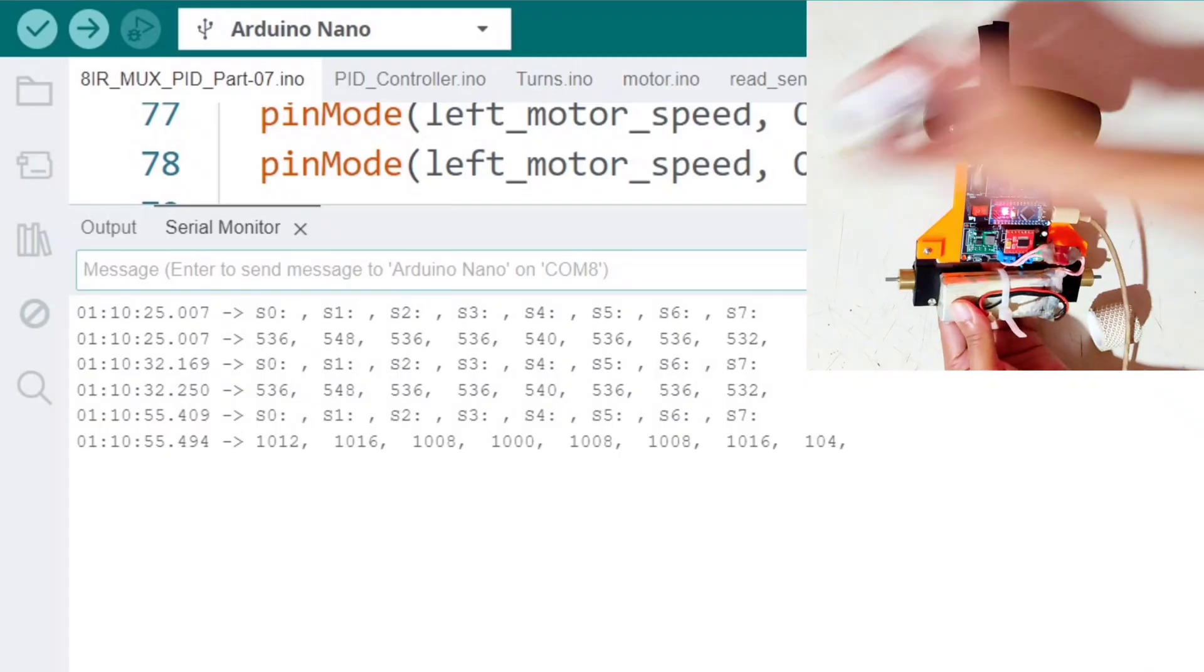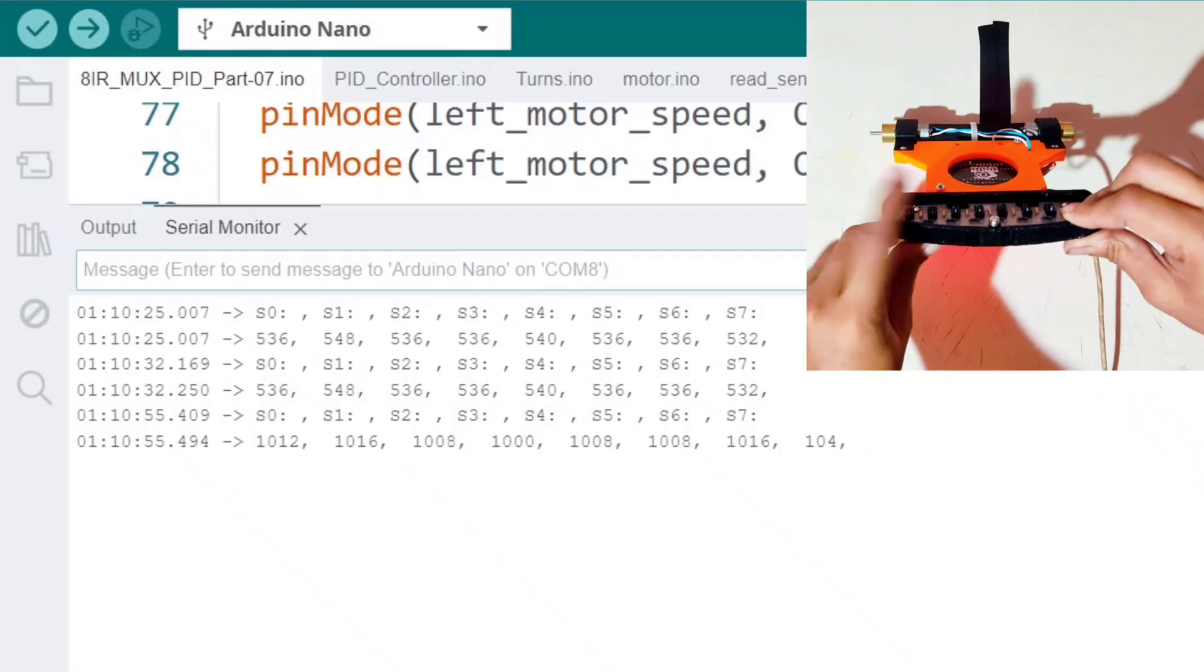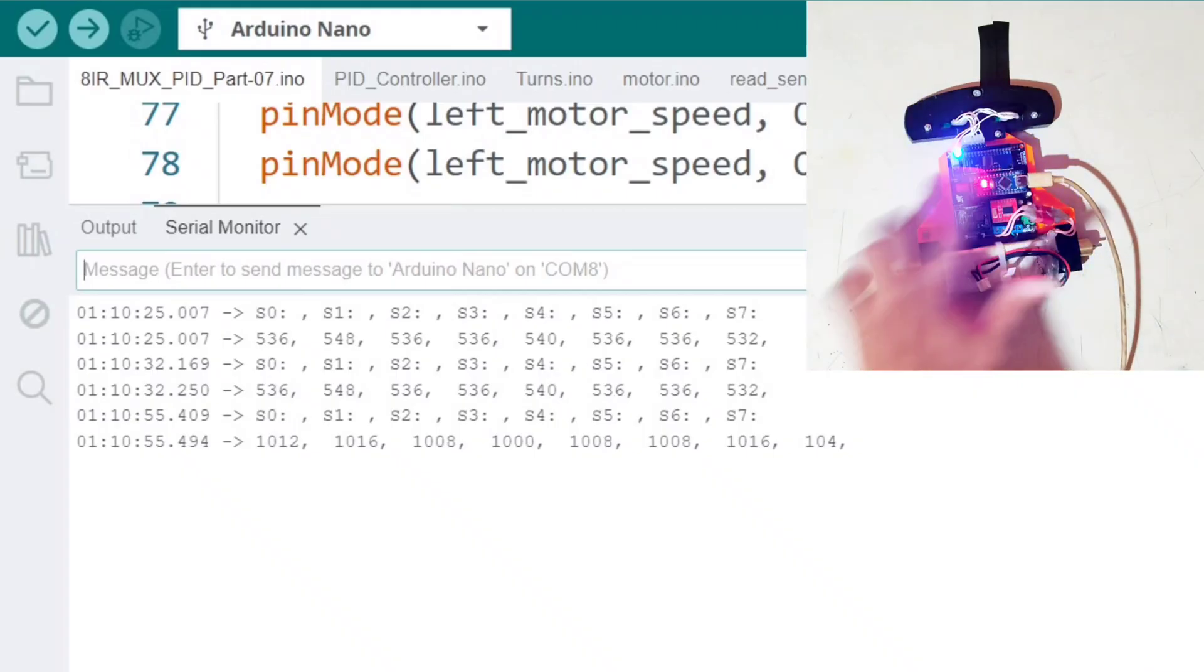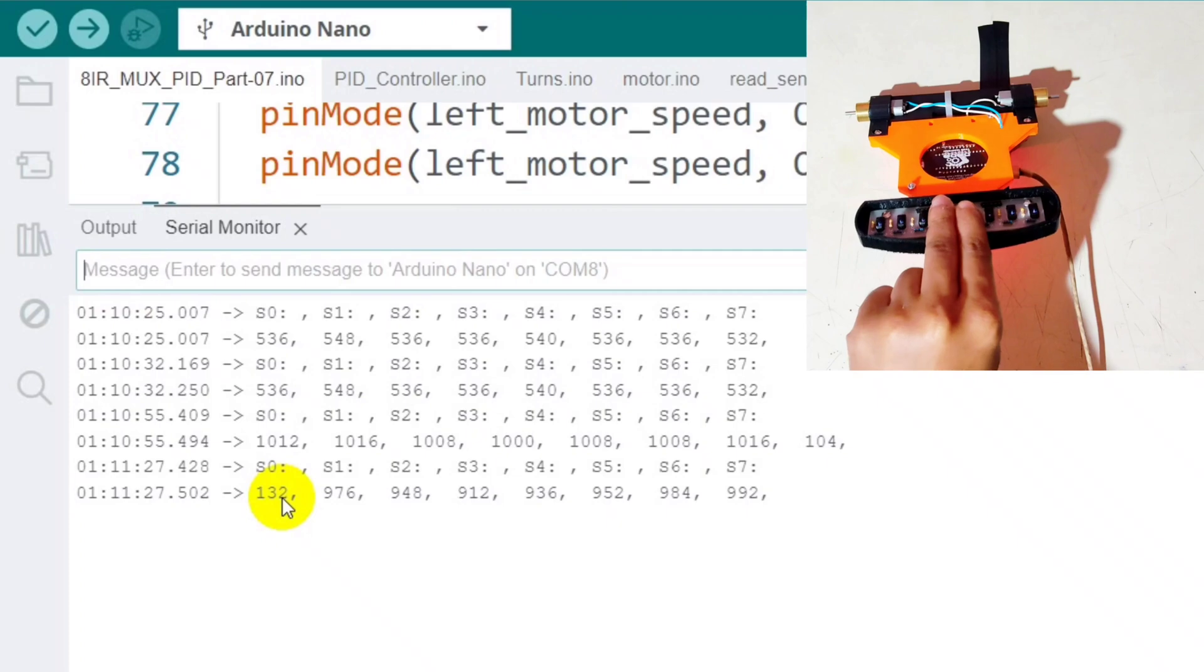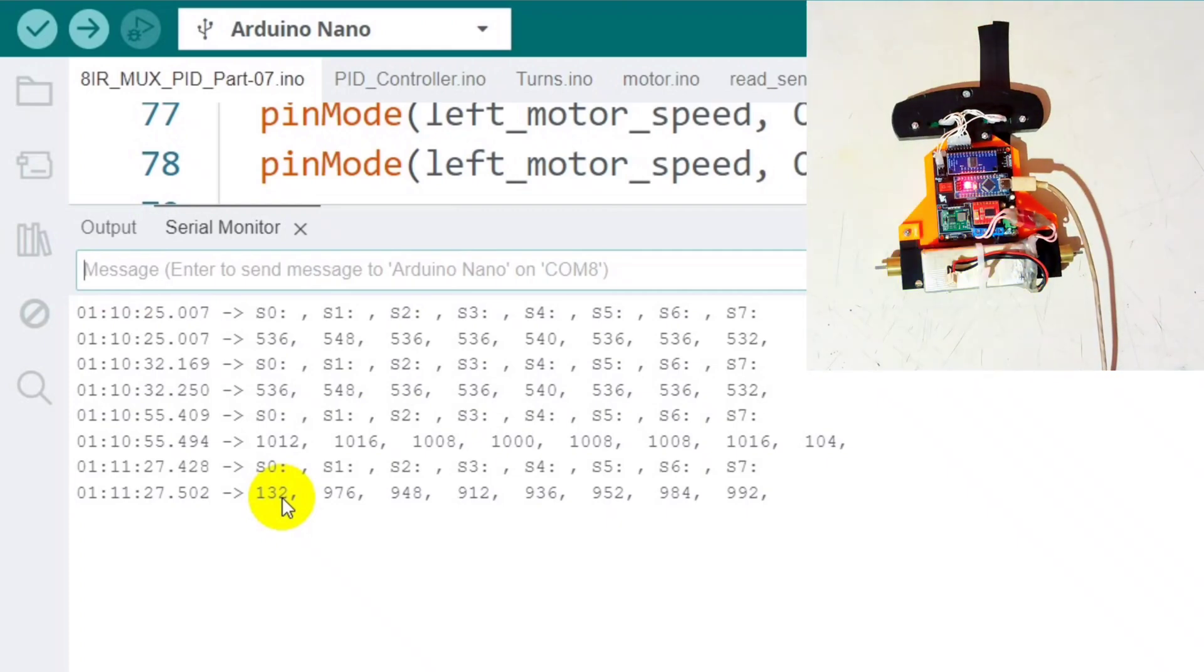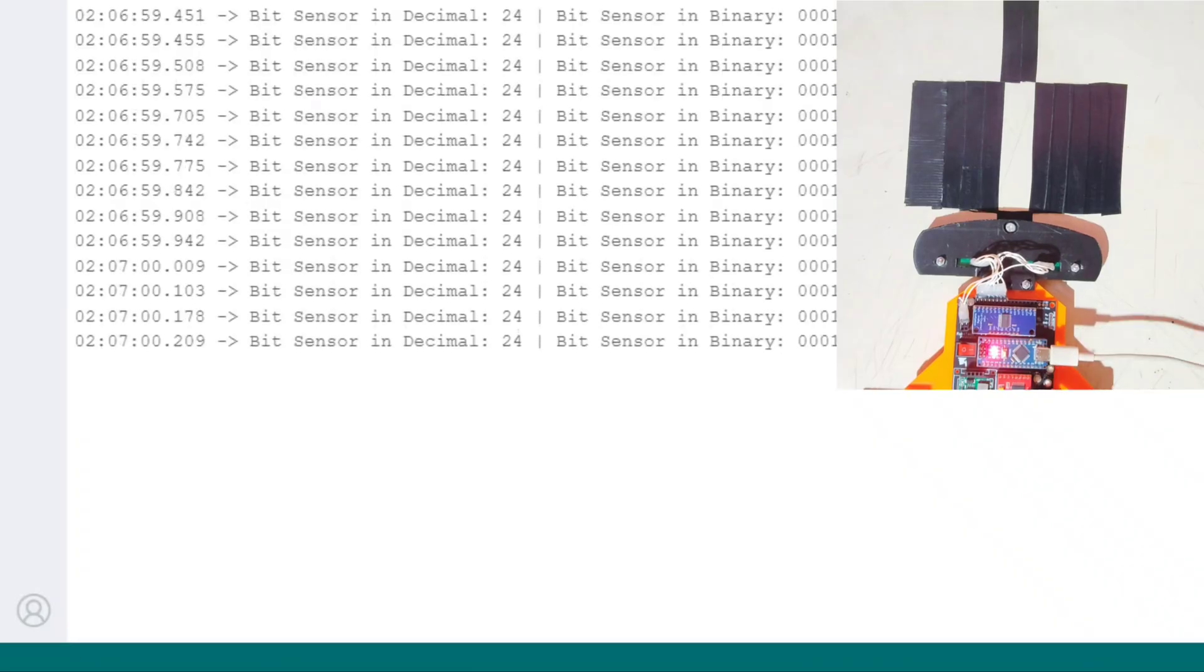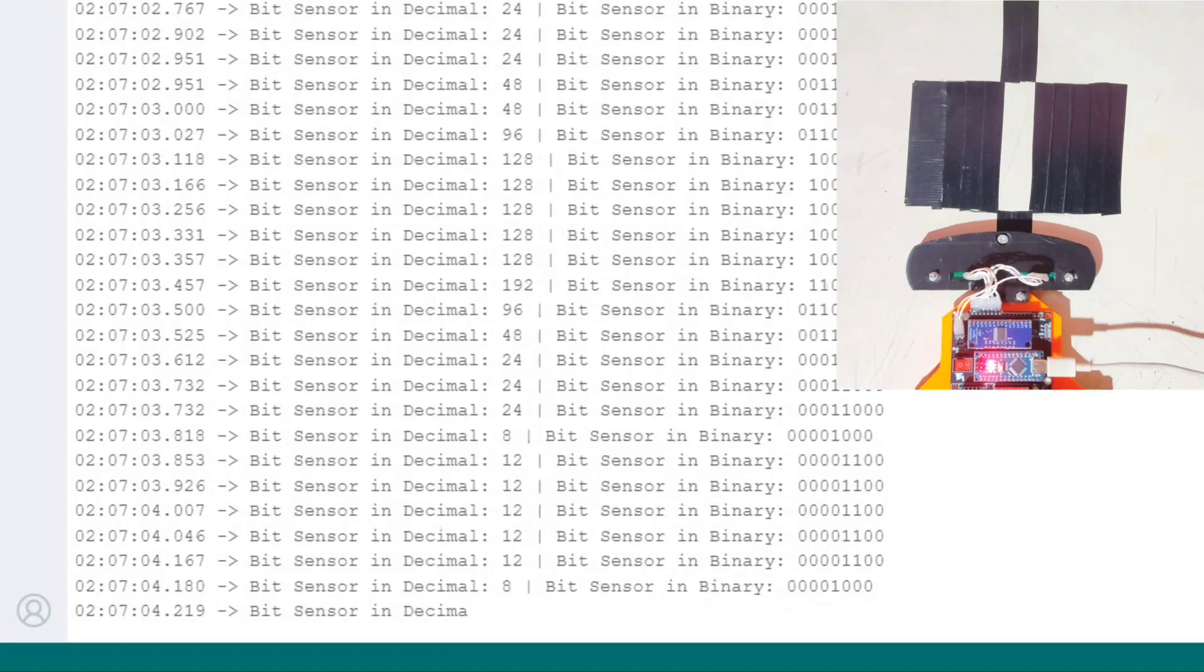As expected, only the rightmost sensor shows a low value because it was always low during calibration, while the other sensors show higher values. For more clarity, I repeat the test. Then, I display the bit sensor values in the serial monitor to check the analog-to-digital conversion, and everything works perfectly.